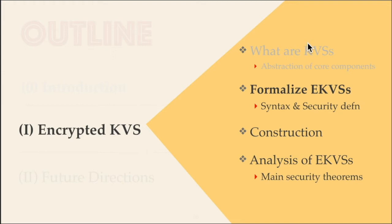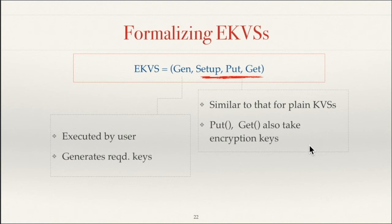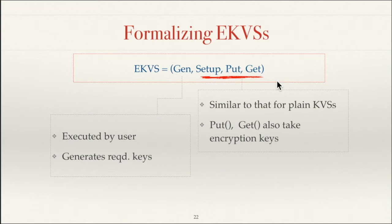Now that we have defined and abstracted the components of key value stores, the next step is to think about encrypted key value stores and formalize their security using the provable security paradigm. The first step is to define its syntax — what do we mean by an encrypted key value store? An encrypted key value store consists of four protocols: gen, setup, put, and get. These are similar to plain key value stores, except that put and get also take encryption keys used to encrypt label-value pairs. Gen is a protocol that clients use to generate these encryption keys.